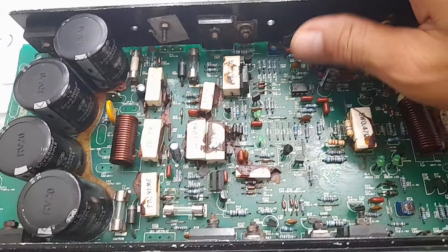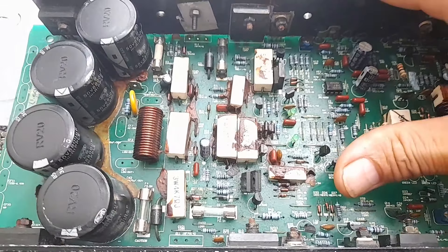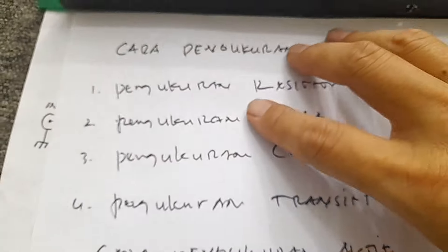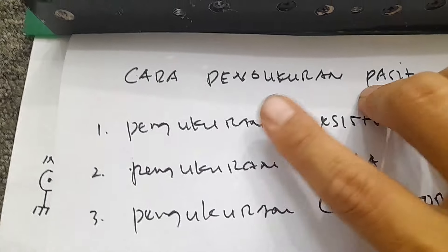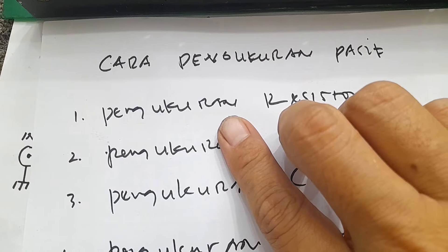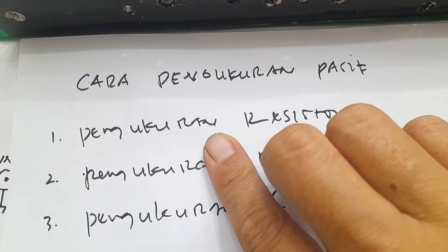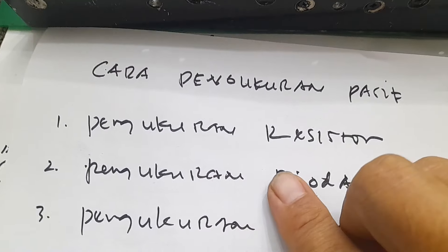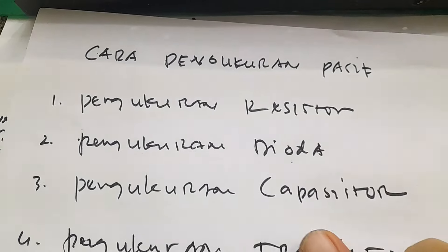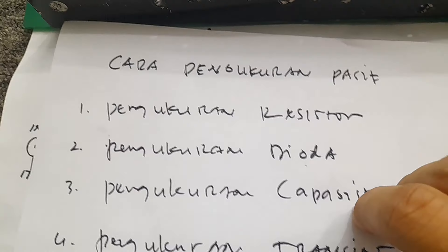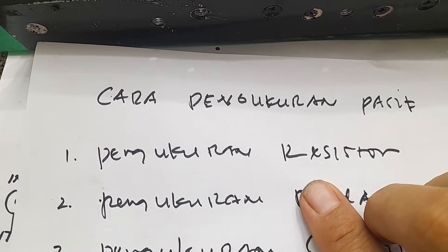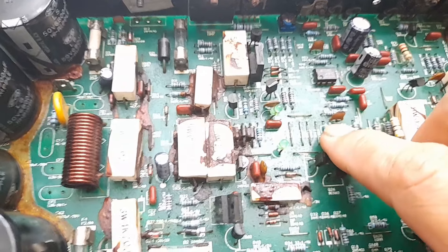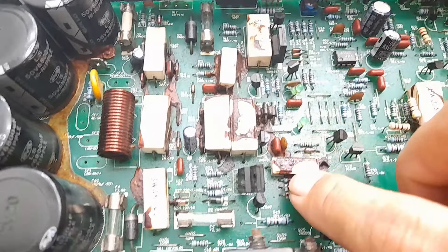Selanjutnya, cara pengukuran di bagian skema ini adalah cara pengukuran pasif dan cara pengukuran aktif. Untuk pengukuran pasifnya, teman-teman gunakan tester untuk pengukuran nilai komponen yang ada di mesin driver, dari mulai pengukuran resistor, pengukuran dioda, pengukuran kapasitor, dan pengukuran transistor. Pengukurannya harus lebih teliti dan telaten satu per satu.